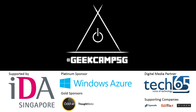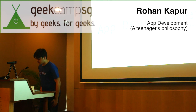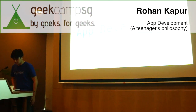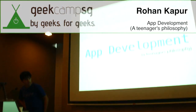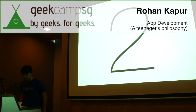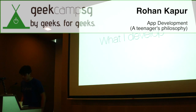My name is Rohan Kapoor, and I'm a 14-year-old iOS developer. I won a scholarship to attend WWDC this year, Apple's Development Conference, and I'm just going to talk about app development from my point of view. I'm going to talk about two things today: what I develop and how I develop.